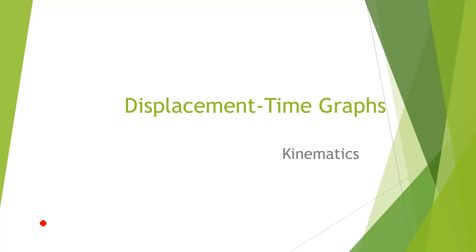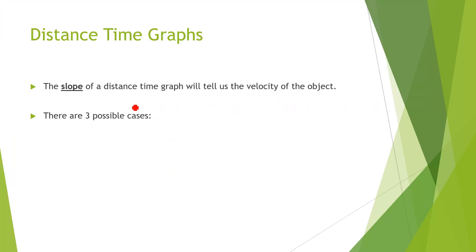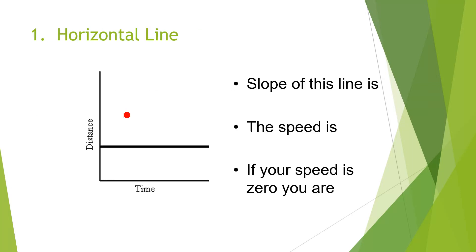Hello everyone, welcome to EasyEdu. Today we are going to discuss displacement-time graphs. We will explain in detail what a distance-time graph is and what the slope of a distance-time graph represents. There are three possible scenarios. Consider a displacement-time or distance-time graph where the y-axis represents distance and the x-axis represents time. The slope of a distance-time graph is velocity.